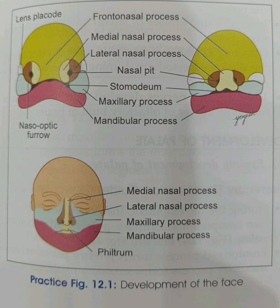Development of the nose: the bridge of the nose is from the frontonasal process, and the dorsum and tip of the nose from the fused medial nasal processes. The alae of the nose are from the lateral nasal processes. Anterior nares (nostrils) from the nasal pit. The nasal cavity from the nasal sacs, and posterior nares (choanae) from rupture of the bucconasal membrane.